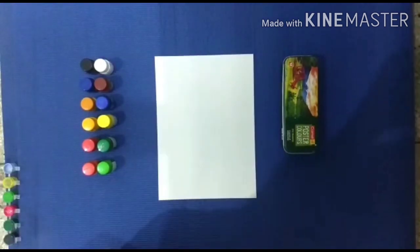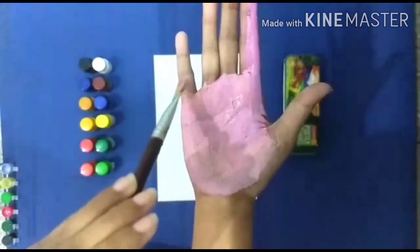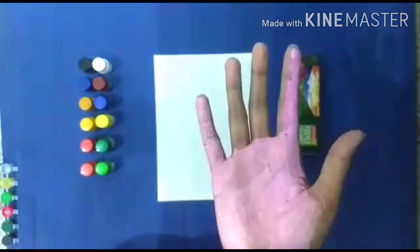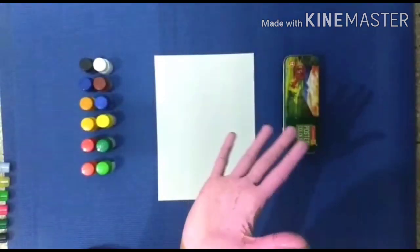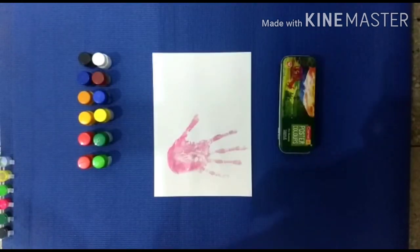And it's done. Next we will make flamingo, for which you have to paint your right palm. Place it on the paper like this. Give it a little bit of finishing.